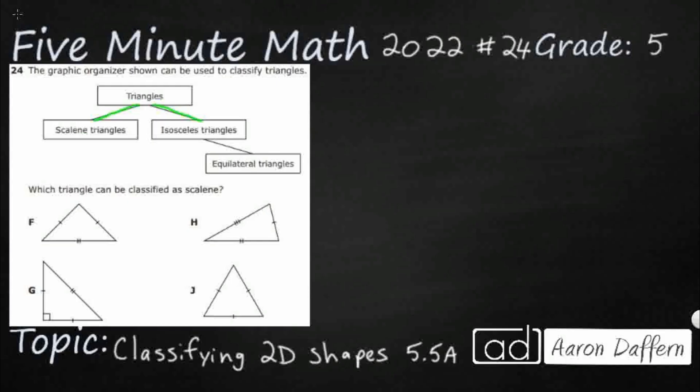So scalene triangles, which is what we need to define. Then we have isosceles triangles, and then under that is equilateral. So let's see if we can figure out what we are talking about. When we are dealing with triangles, all triangles have three sides. That is the definition of a triangle. It is a polygon, which means it is closed, has no curves, all straight lines, and there are three sides, three angles.